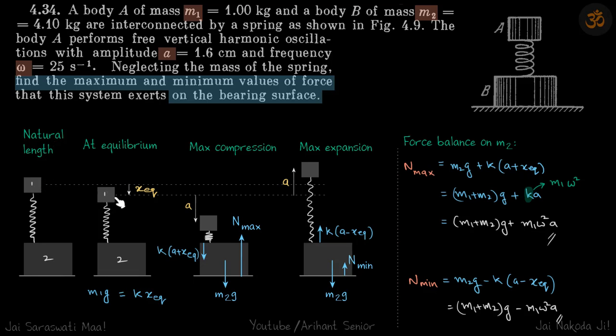At equilibrium position, forces on m1 will be balanced, so m1g equals k times x_eq. This length is x_eq. Now it's performing SHM with amplitude a, so with respect to its equilibrium position it will go down a and go up a.